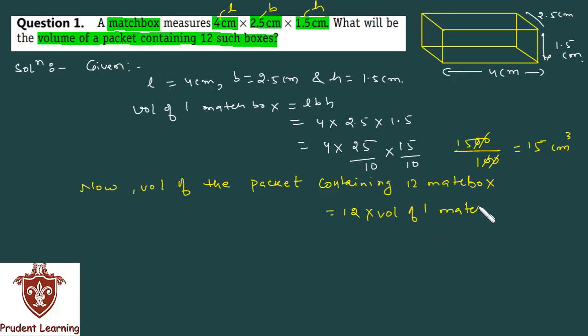So 12 times the volume of 1 matchbox - you have 15, so 12 × 15 equals 180. The unit is cm cube.